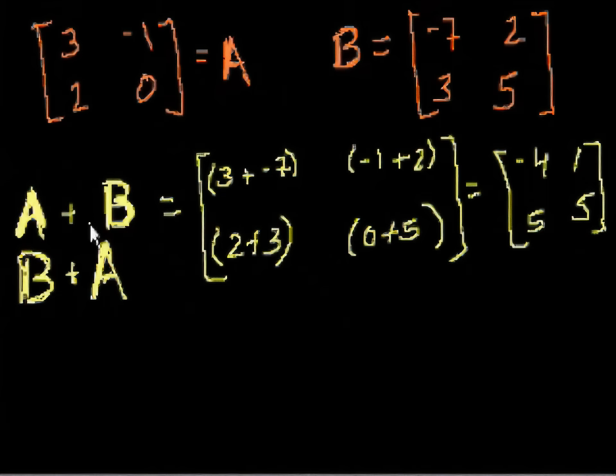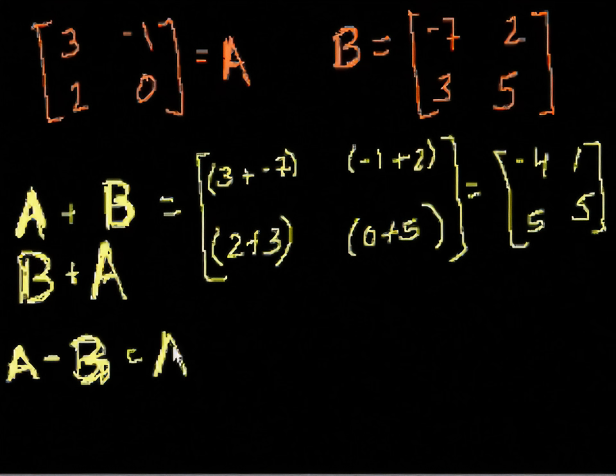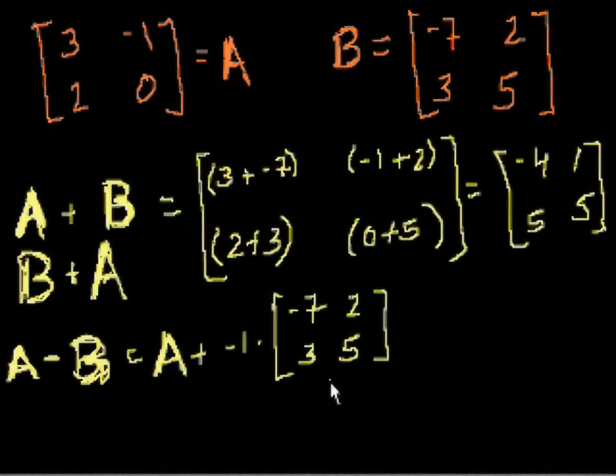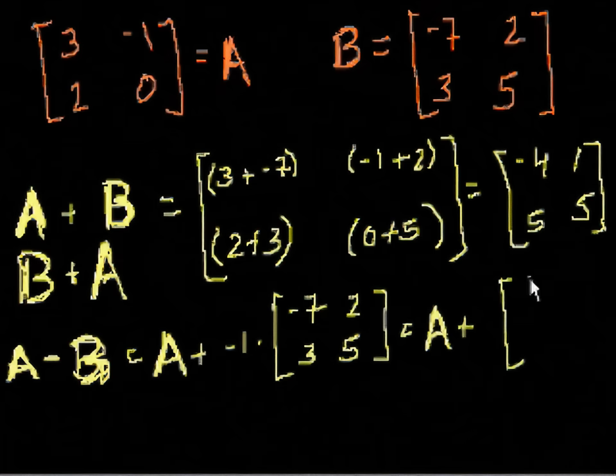And you can imagine, matrix subtraction is essentially the same thing. Well, actually, let me show you. What would be A minus B? Well, that's the same thing as A plus minus 1 times B. And what's B? Well, B is [-7, 2, 3, 5]. And when you multiply a scalar, when you just multiply a number times a matrix, you just multiply that number times every one of its elements. So that equals matrix A plus the matrix [7, -2, -3, -5]. We just multiply this negative 1 times every element in here.